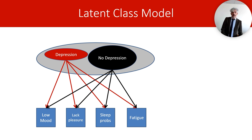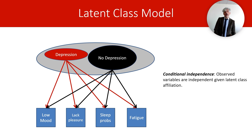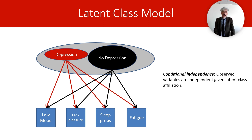The latent class model assumes that what explains the correlation between these indicators — these variables I observe — is an underlying construct: in the example, the categorical dimension of being depressed or not. When I introduced the latent classes, I removed the correlations between symptoms, and this is to represent one of the main assumptions of latent class analysis: conditional independence. This means that the variables we observe are conditionally independent of each other given the level of the latent variable. The association between being in low mood, inability to experience pleasure, and so on, occurs because these behaviors are caused by an underlying status — that of being depressed. If I control for the underlying status, I should not observe residual associations between these variables.